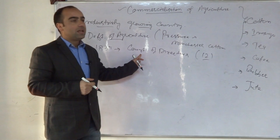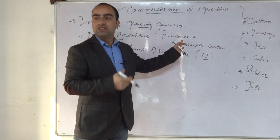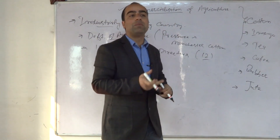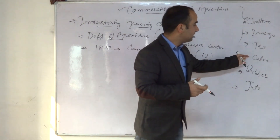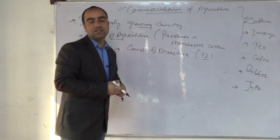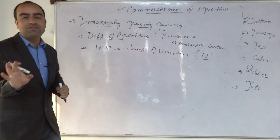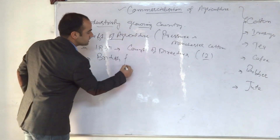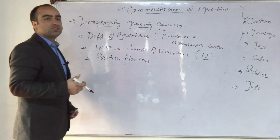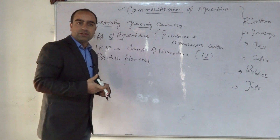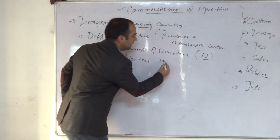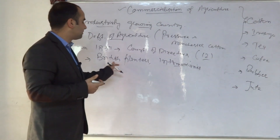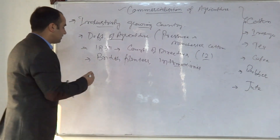The British India always encouraged the production of those crops which were either needed for their industries or for which the market was readily available - whether the American or European market. For example, tea and coffee had great demand, as did jute, in American and European markets. This commercialization of agriculture was never beneficial for the Indian population; it was beneficial only for the British planters and to some extent for intermediaries - the middlemen and moneylenders who gave money to the peasants.